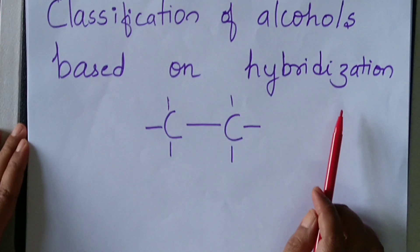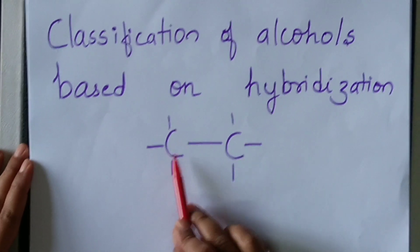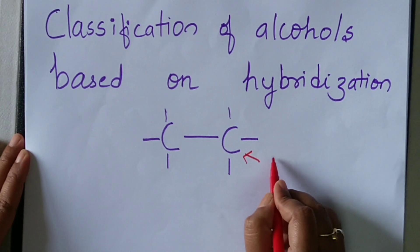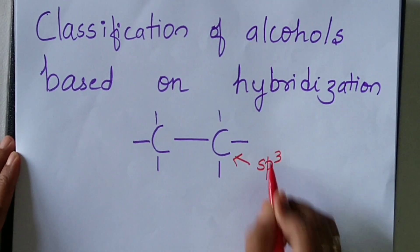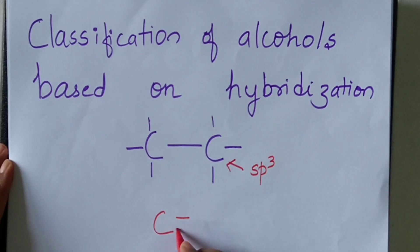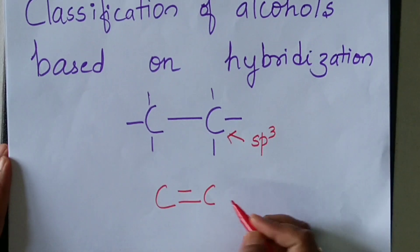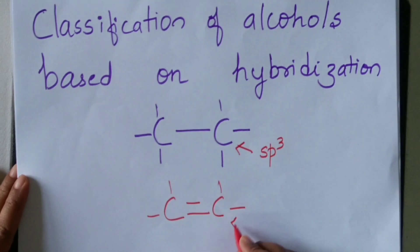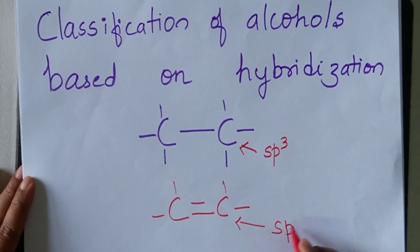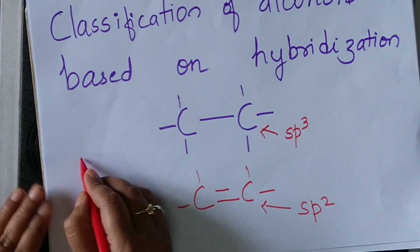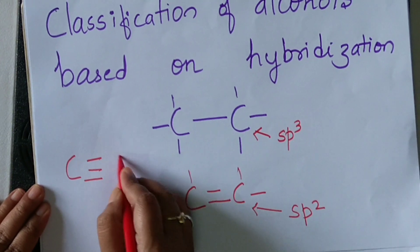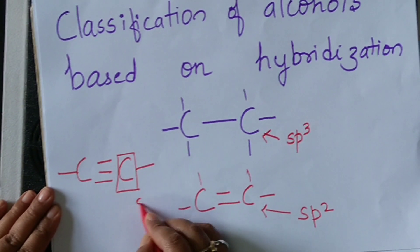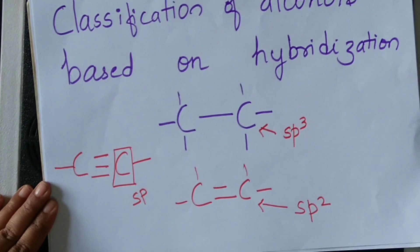A small revision: if a carbon-carbon single bond is present, the carbon is said to be SP3 hybridized. If a carbon-carbon double bond is present, carbon is said to be SP2 hybridized. If a carbon-carbon triple bond is present, then the carbon is said to be SP hybridized.